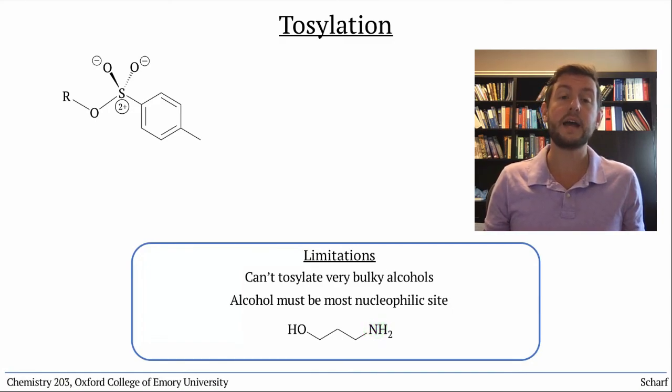To summarize, alcohols can be turned into good leaving groups by protonation, most commonly in the context of SN1 reactions, or by tosylation, which is typically used to enable SN2 reactions.